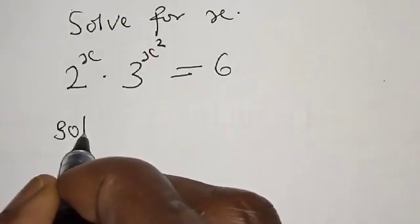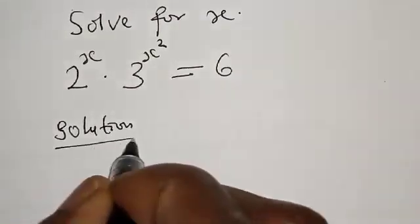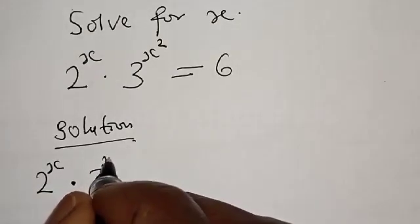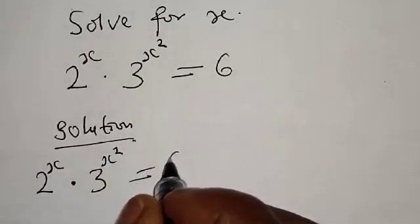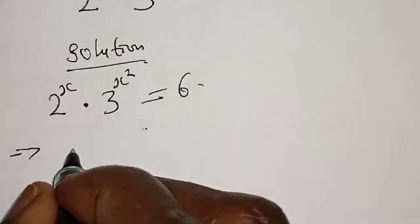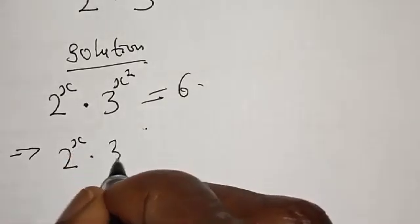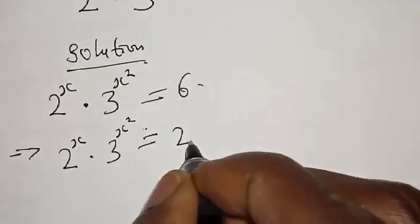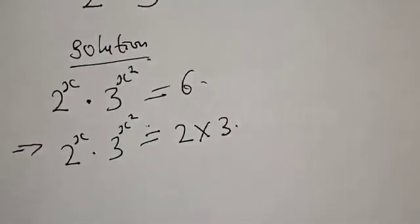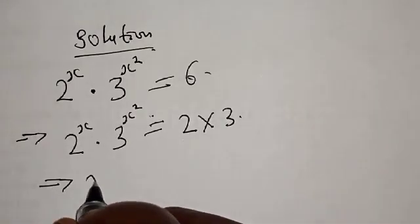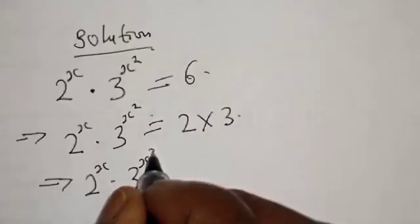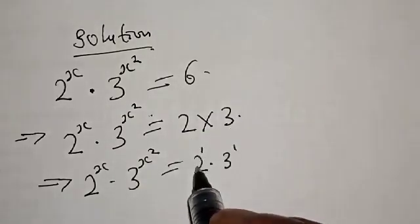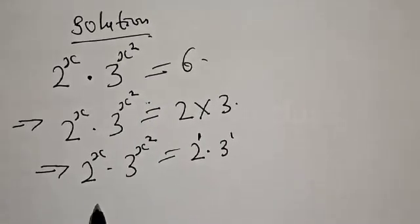Solution: we have 2 raised to power x multiplied by 3 raised to power x squared equal to 6. This can be expressed as 2 raised to power x multiplied by 3 raised to power x squared equal to 2 raised to power 1 multiplied by 3 raised to power 1, because 2 is the same as 2 raised to power 1 and 3 is the same as 3 raised to power 1.